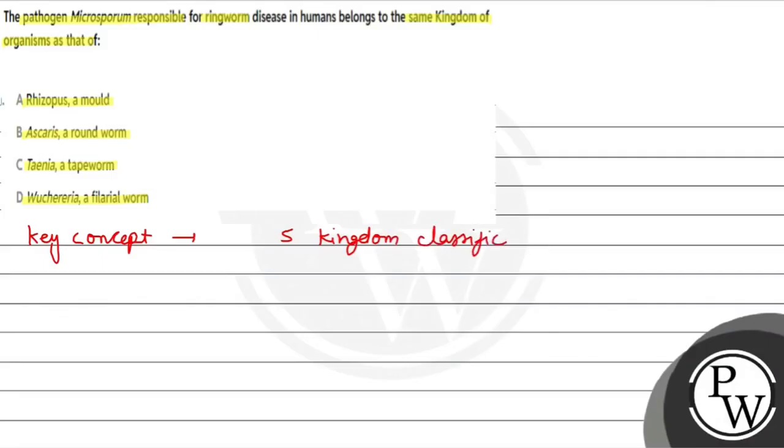Which kingdoms has he given us? Monera. Second, Protista. Third is Fungi. Fourth is Plantae. Last one was Animalia.